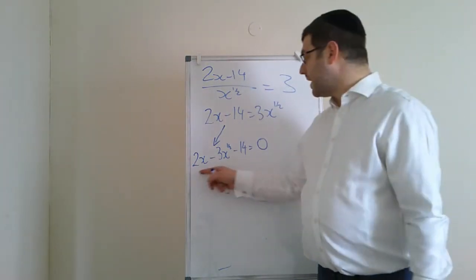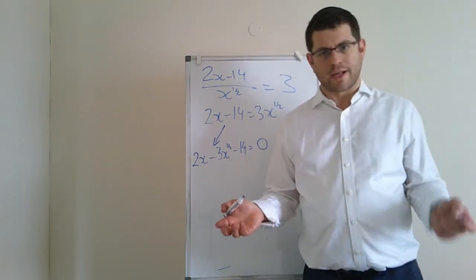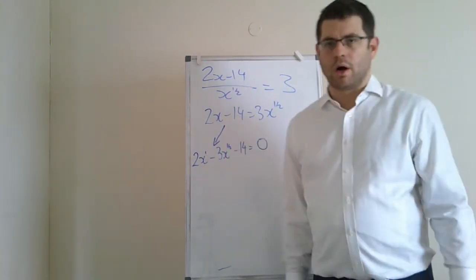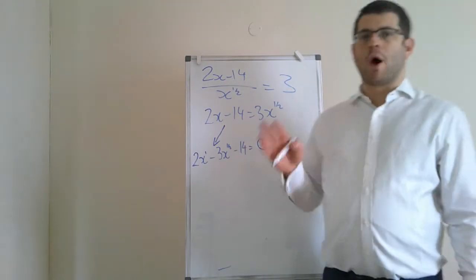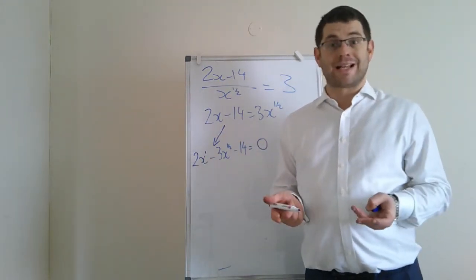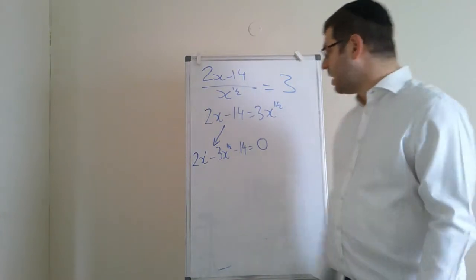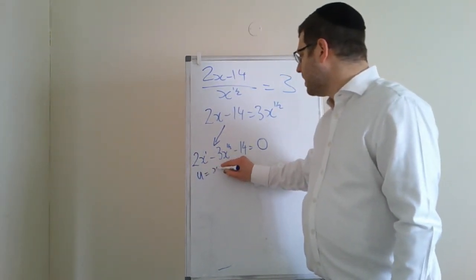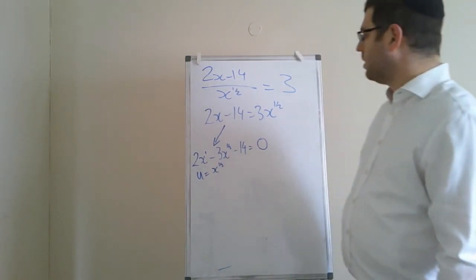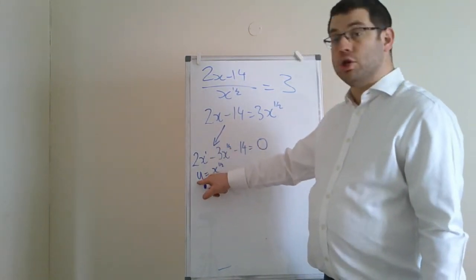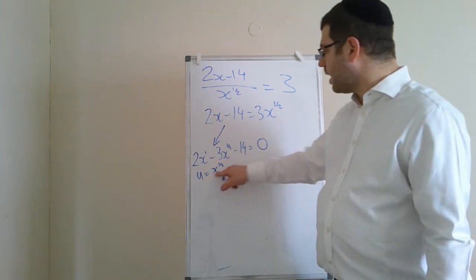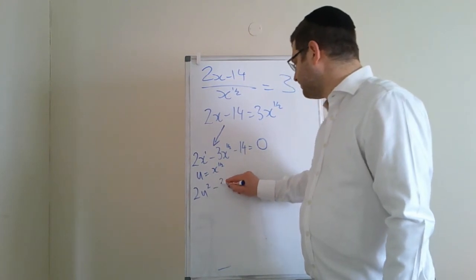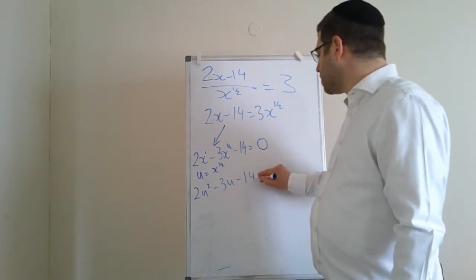So the first thing you can do is bring the 3x to the half to one side, so you end up with 2x minus 3x to the half minus 14 is equal to zero. And then you can treat it as if it's a quadratic. How? Because the power of x here is power 1, and that power is double that power. If you've got two terms when one power is double the other, it's really a quadratic in disguise.